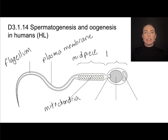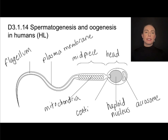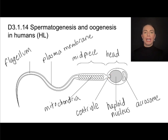The sperm also has the head, and inside the head are a few features. One is the acrosome, which is full of enzymes that we'll talk about later. There is the haploid nucleus — in humans, that would have 23 chromosomes inside. And then it has a centriole, which is going to help move the nucleus around when it needs to.